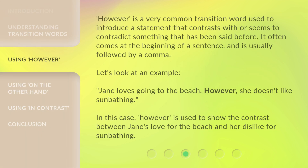However is a very common transition word used to introduce a statement that contrasts with or seems to contradict something that has been said before. It often comes at the beginning of a sentence and is usually followed by a comma. Let's look at an example: Jane loves going to the beach. However, she doesn't like sunbathing. In this case, however is used to show the contrast between Jane's love for the beach and her dislike for sunbathing.